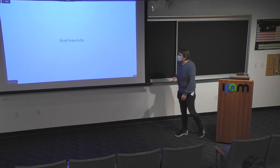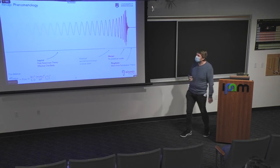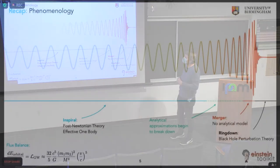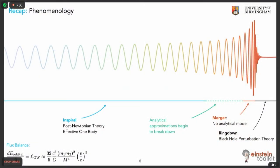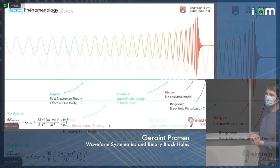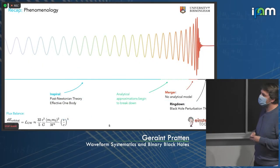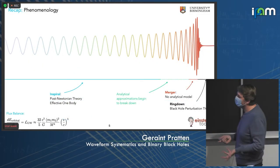We are looking at binary black hole waveform models. This is a stereotypical inspiral-merger-ringdown. During the inspiral the black holes are sufficiently far apart — you can use perturbative expansions of the Einstein field equations in terms of things like velocity over the speed of light, so post-Newtonian expansions. You can resum these into effective one-body models. But as the binary inspirals, the system becomes relativistic, velocities become comparable to the speed of light, and perturbative expansions break down.